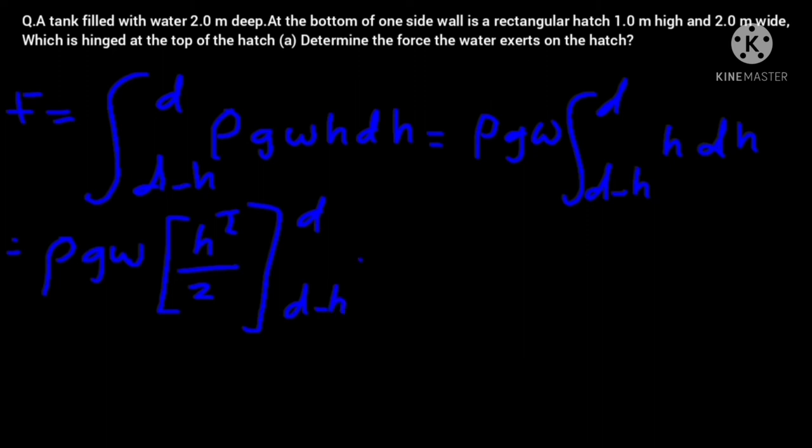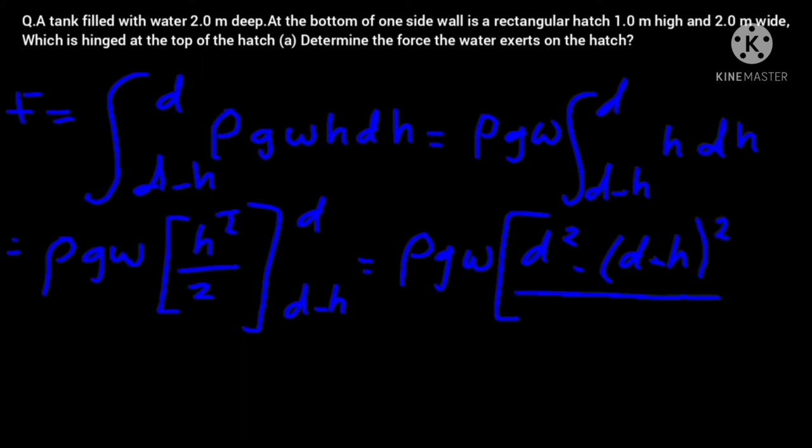Is equal to ρ or density times gravity times width, open brackets, d squared minus d minus h in brackets squared also, over 2. So the upper limit squared minus the lower limit squared over 2, integrating that.